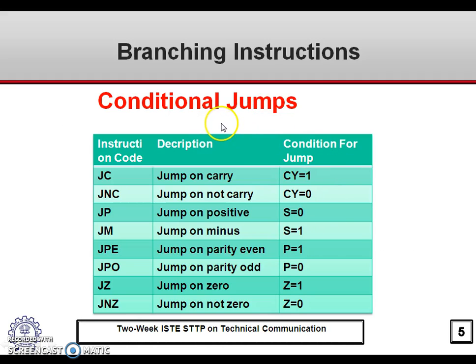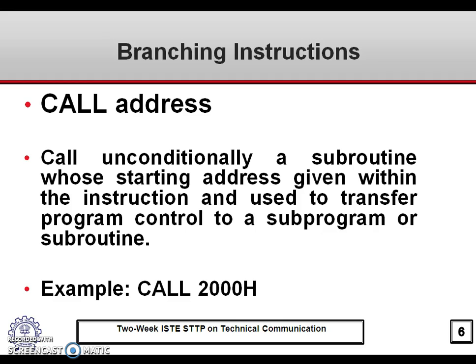These are the conditional jump instructions, which check the status of different flags. JC means jump on carry — the carry flag must be set. JNC means jump on not carry — the carry flag should be 0, and only then will the program sequence jump to the specified address. Similarly, there are JP, JM, JPE, JPO, JZ, and JNZ instructions.